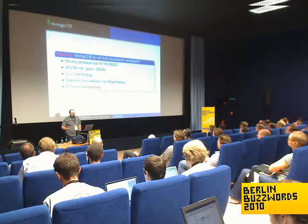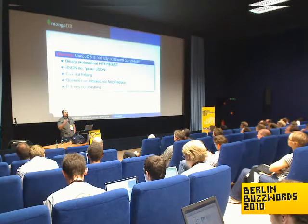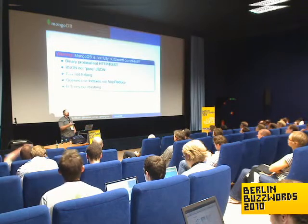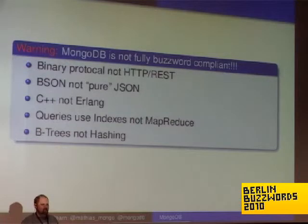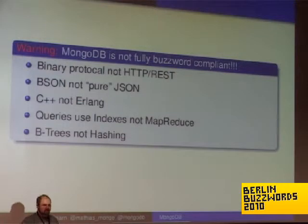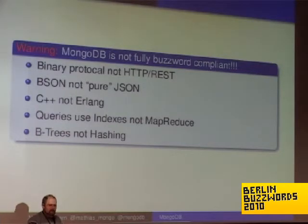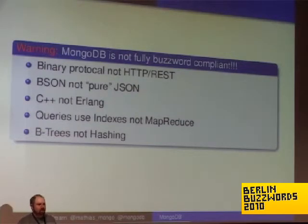One of the nice things Mongo can do is that whatever format you send over the wire is the exact same format we use on disk and in memory as our internal data structure. That gives us a speed boost — there's basically one copy when you write and one copy when you read. We use BSON rather than JSON, and that's what I was talking about with the binary protocol. The format has the nice advantage that it can be used as an in-memory data structure.